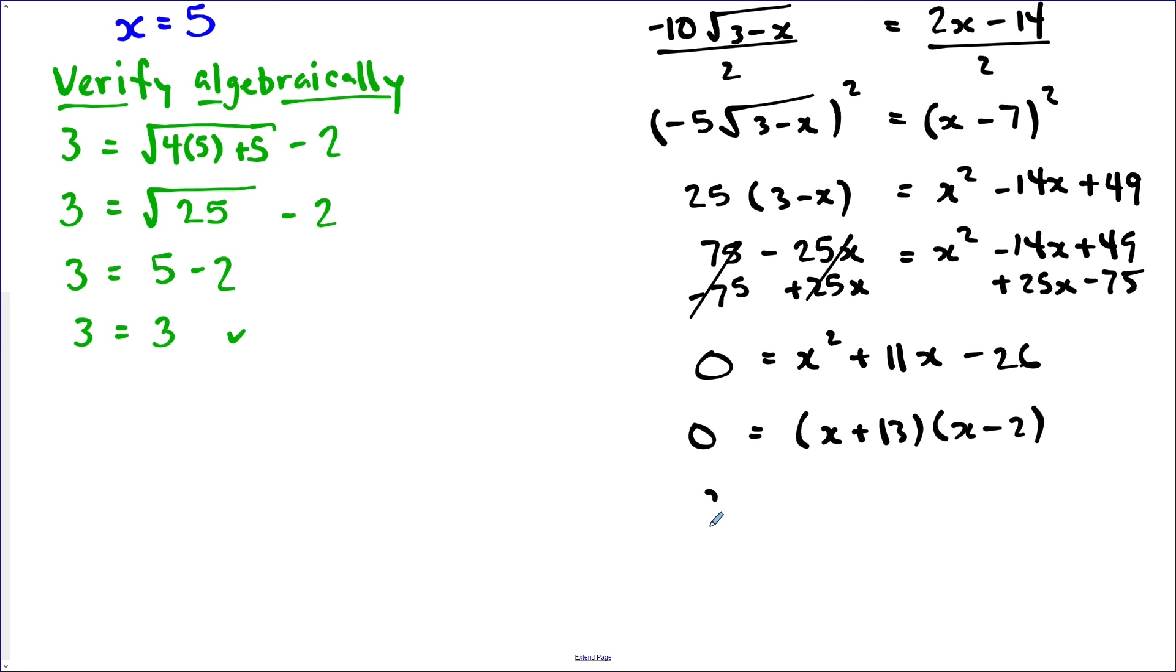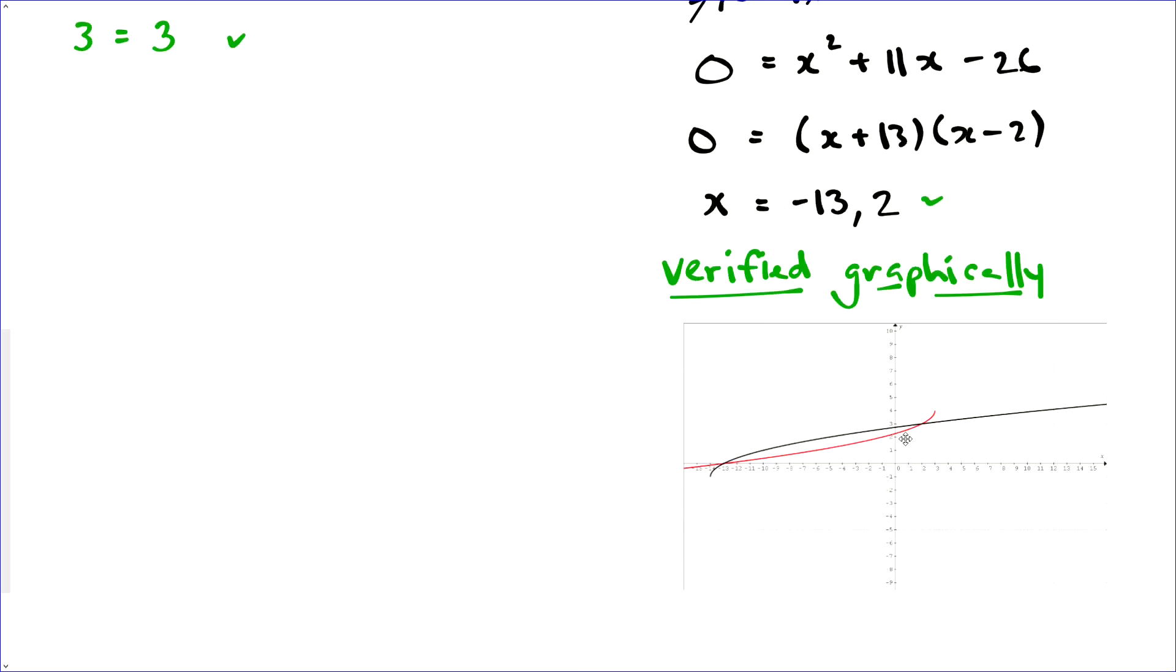Which means that x is equal to negative 13 and positive 2. Let's verify this one graphically. When we graph this, we see that the intersections between the left side and the right side of the equation do happen at x equals 2 and x equals negative 13.